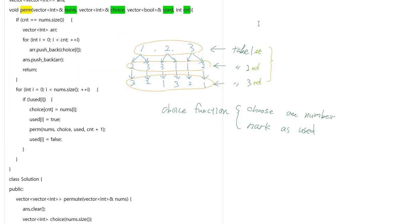perm function. It has four parameters: first is the numbers array, second is the choice number array, third is the used array containing information about which numbers are being used (the sequence is the same as numbers), and the last parameter